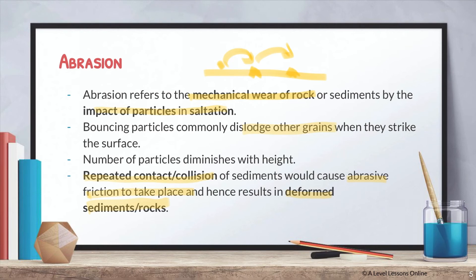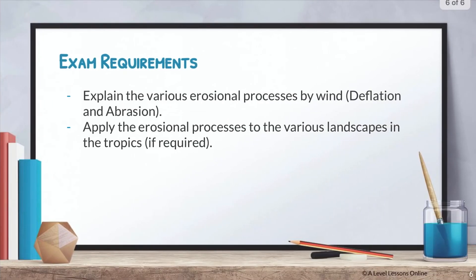As your sediments continue to collide with one another, it causes friction and a lot of dislodging of sediments, which causes your rocks to become very odd in shape — a bit deformed — as sediments are being chipped out of them through abrasion.